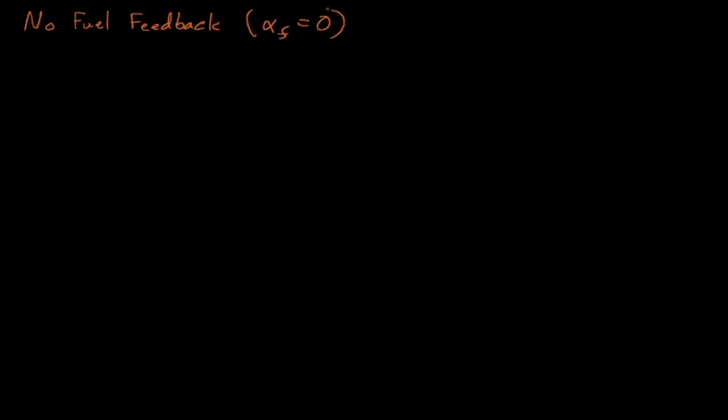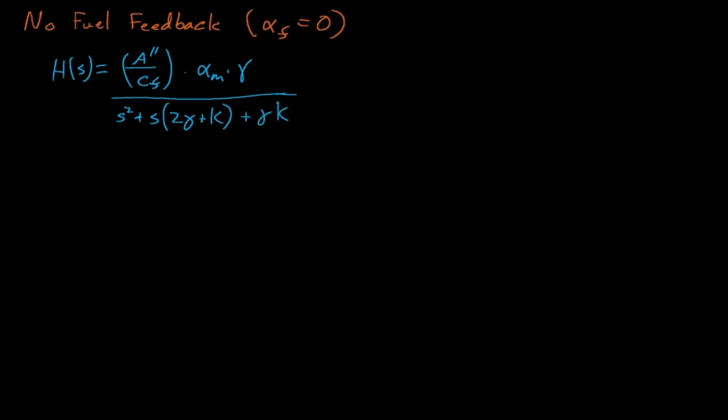Let's consider another special case: what happens if we have no fuel feedback? In this case, the fuel temperature reactivity coefficient approaches zero, giving us this expression for h(s). Notice this expression for h(s) is actually different compared to our expression from the previous lecture with only single temperature feedback. Why? Even though alpha_fuel equals zero, our fuel temperature is no longer directly proportional to power — its differential equation now also contains the term describing heat flow out of the fuel into the moderator. This means the fuel temperature could migrate out of phase with the reactor's power.